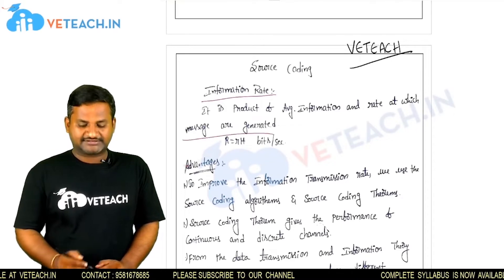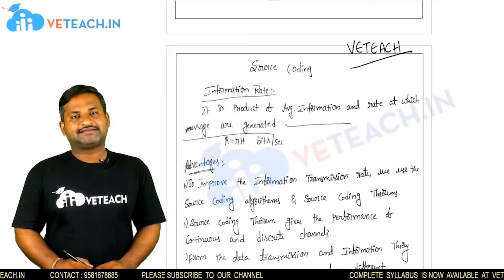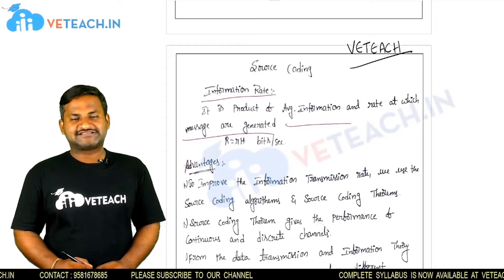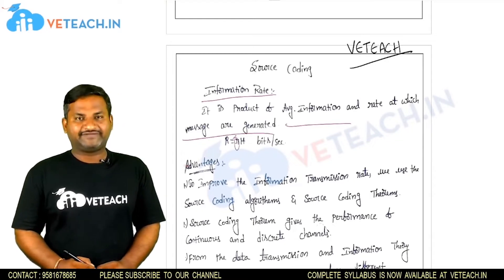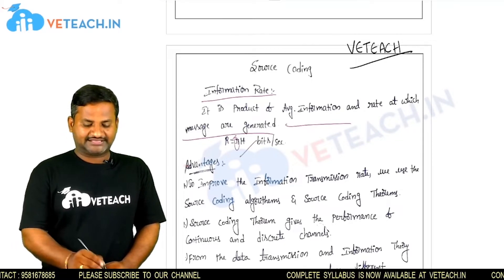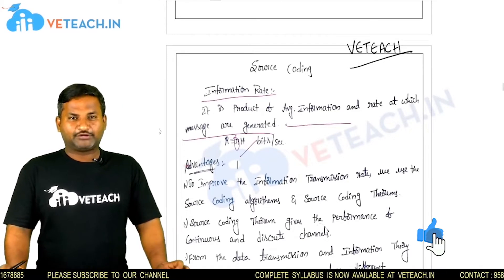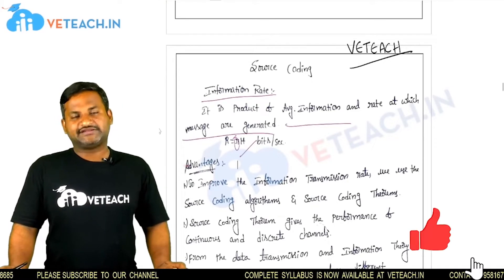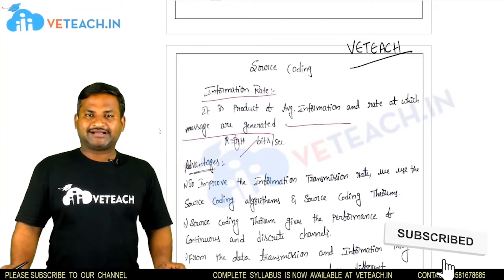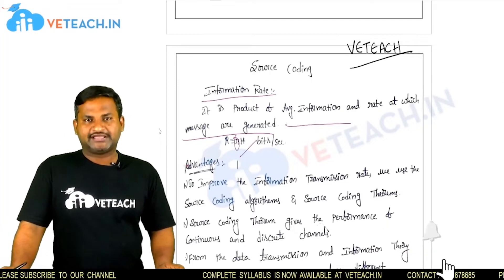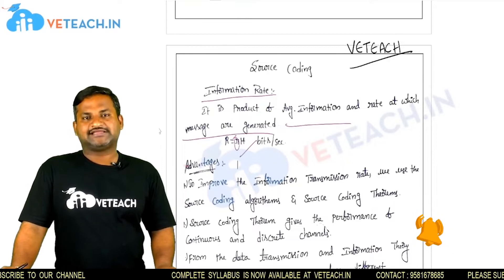Information rate, in terms of information theory, is the rate at which messages are generated and transmitted. The rate at which messages are generated is simply called small r. Average information is nothing but capital H. Therefore, capital R — the information rate — is simply the product of small r and H, where H is nothing but entropy or average information.